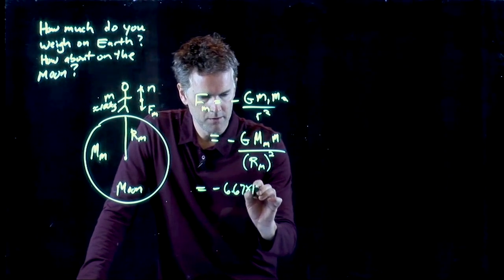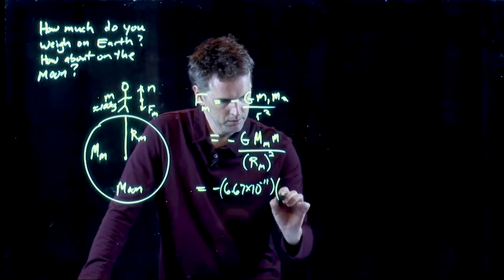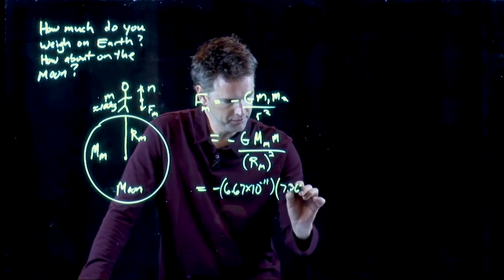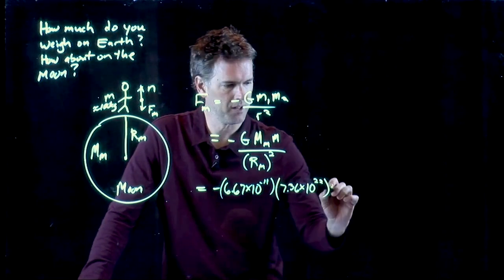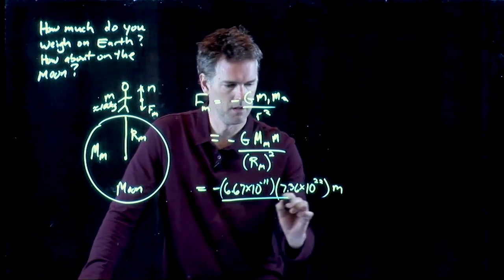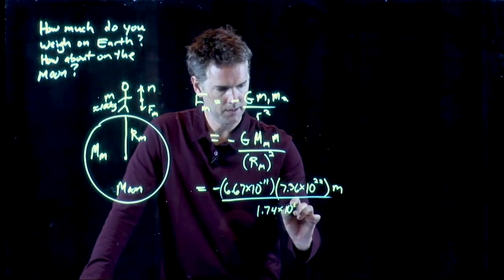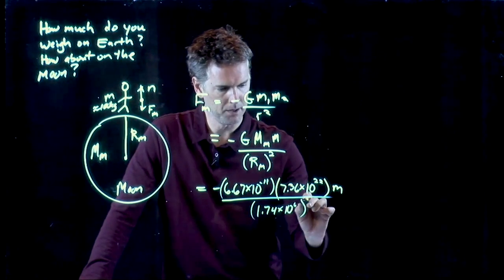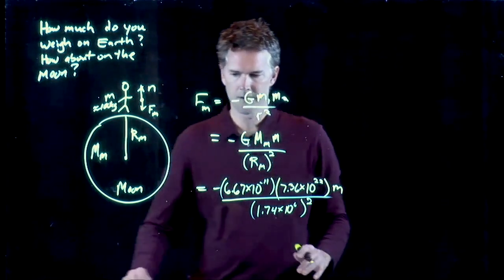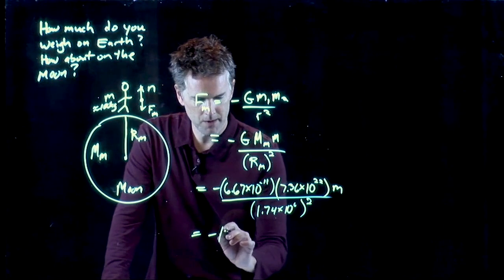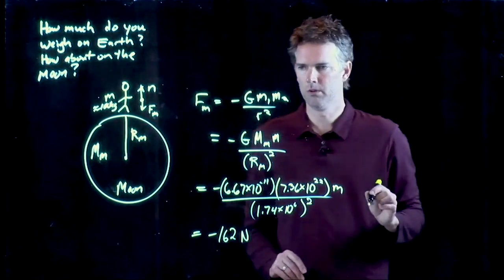This is still 6.67 times 10 to the minus 11. The mass of the Moon is 7.36 times 10 to the 22 kilograms. We're going to stay in SI units. The radius of the Moon is 1.74 times 10 to the 6 meters. And if you punch in all those numbers into your calculator, you should get something around negative 162 newtons.